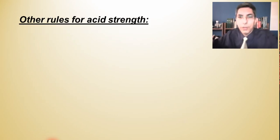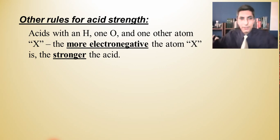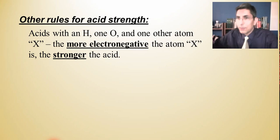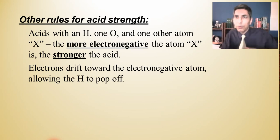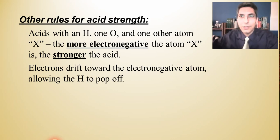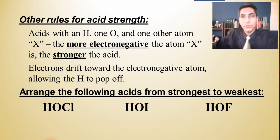There are other rules for acid strength you need to know for AP Chemistry. For acids with an H, oxygen, and some other atom X, the more electronegative that X is, the stronger the acid. You're not given an electronegativity chart on the AP exam, but remembering that atoms toward the top and right of the periodic table are more electronegative is usually enough. Electronegativity pulls electrons toward X, allowing H⁺ to pop off more easily.